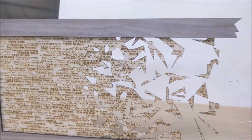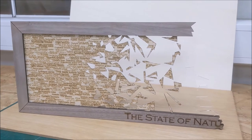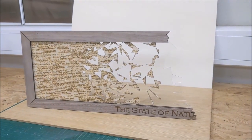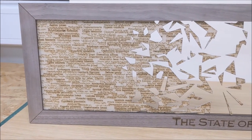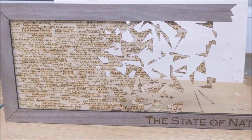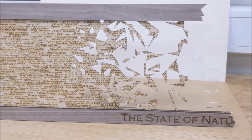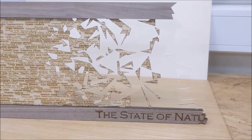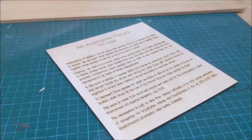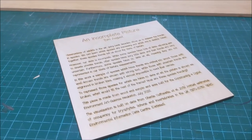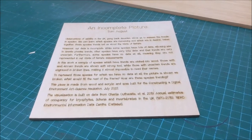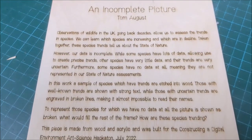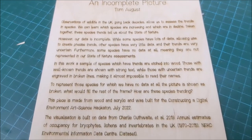The big knowledge gap on the right-hand side is represented by the void created by the acrylic. The addition of the title 'The State of Nature' at the bottom of the frame — kind of incomplete — was actually a bit of an afterthought, but I think it's a really nice addition to the piece. I also laser engraved a little information board which can be displayed next to the picture, helping it to be interpreted and providing all the information about how it was created and where the dataset came from.